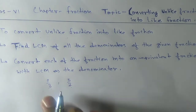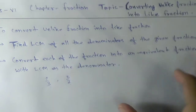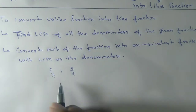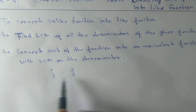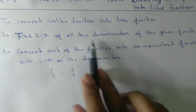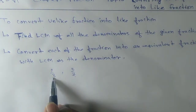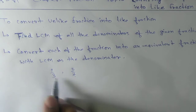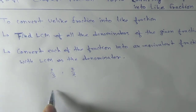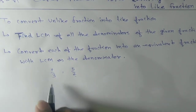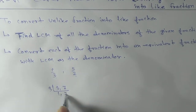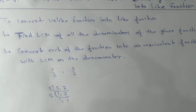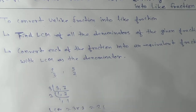So, let's learn how to convert unlike fractions into like fractions. The first step is to find the LCM of all the denominators. Here the denominators are 3 and 7. We know how to find the LCM: 3 × 7 = 21, so the LCM is 21.